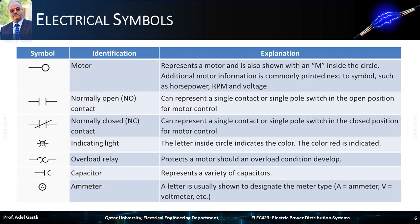The last symbol represents a meter. A letter is usually shown to designate the meter type. For instance, A is used to designate an ammeter and V is used to designate a voltmeter.